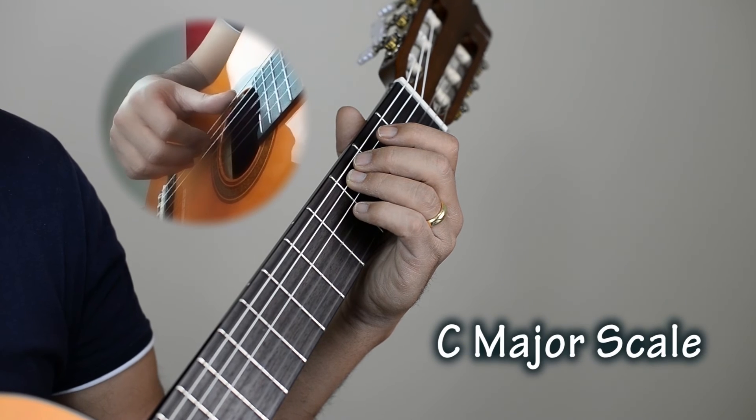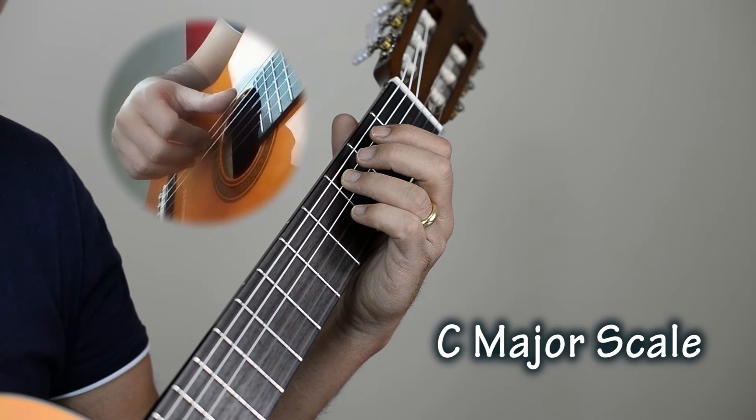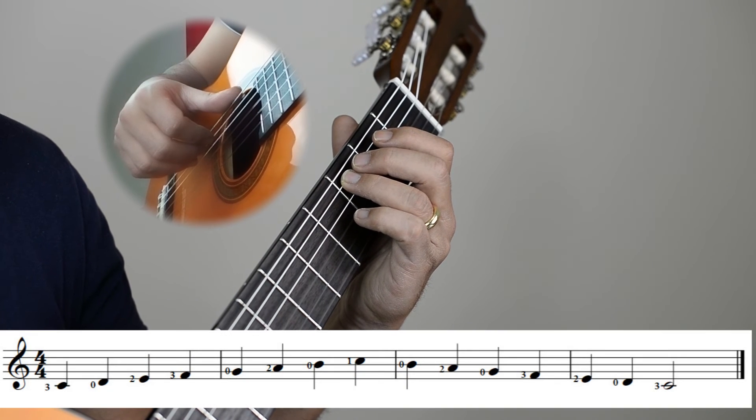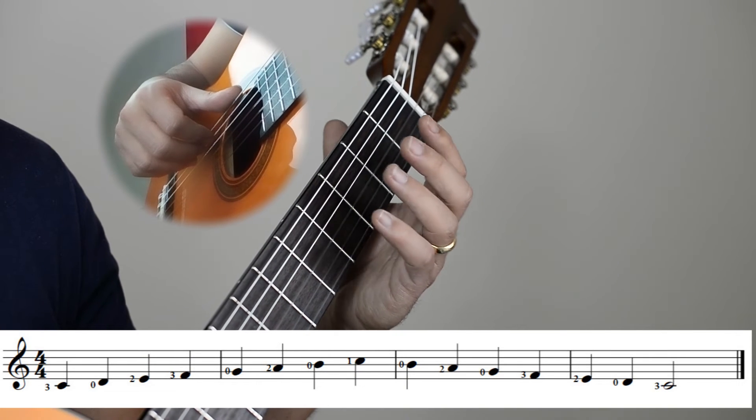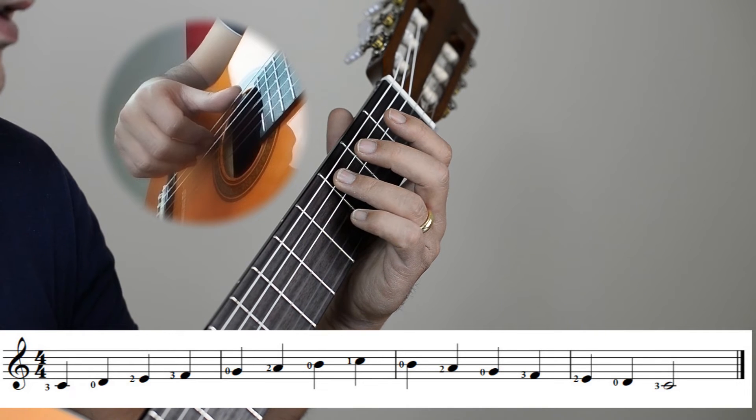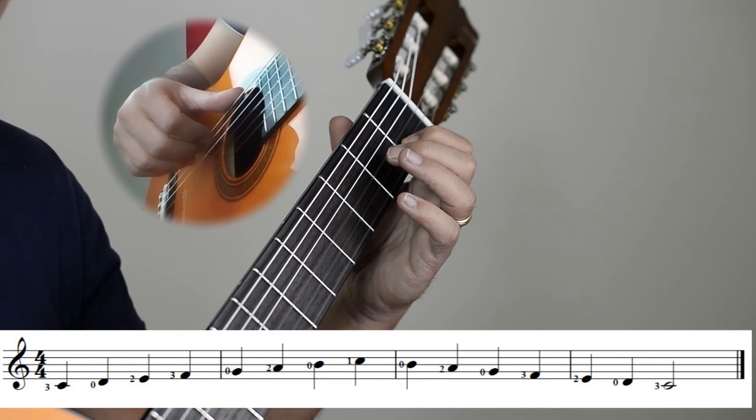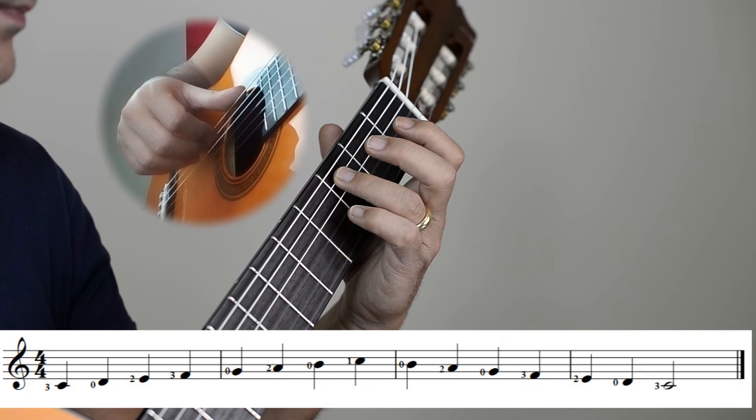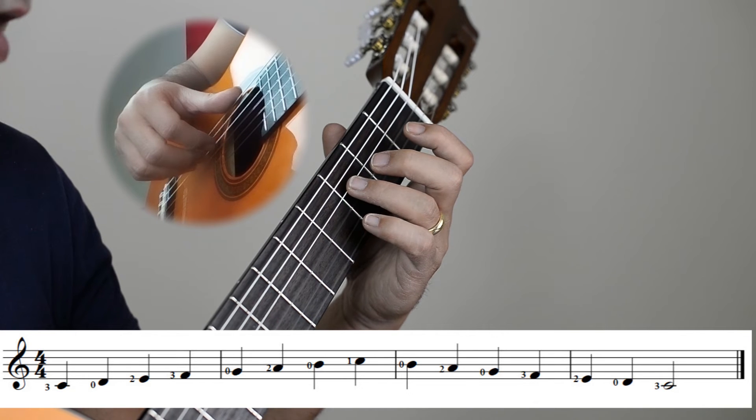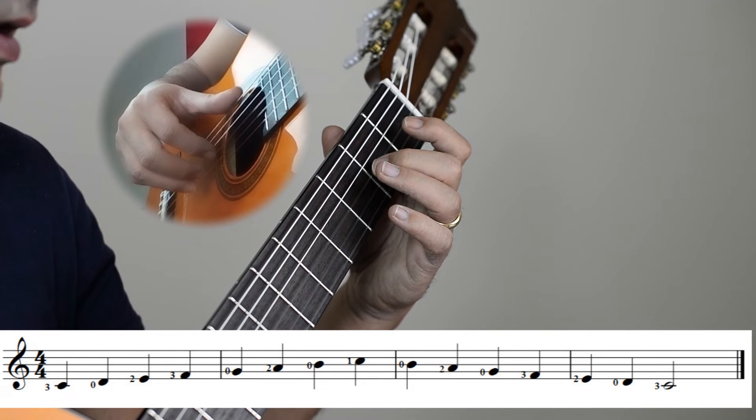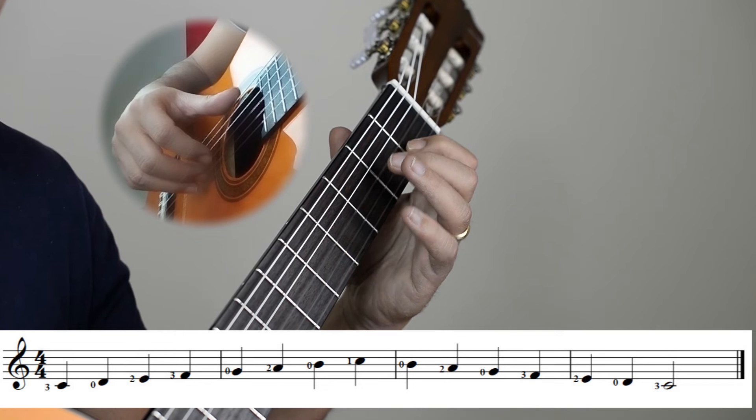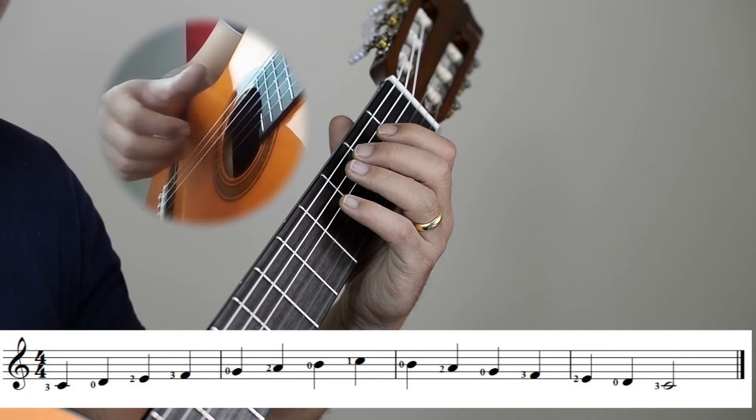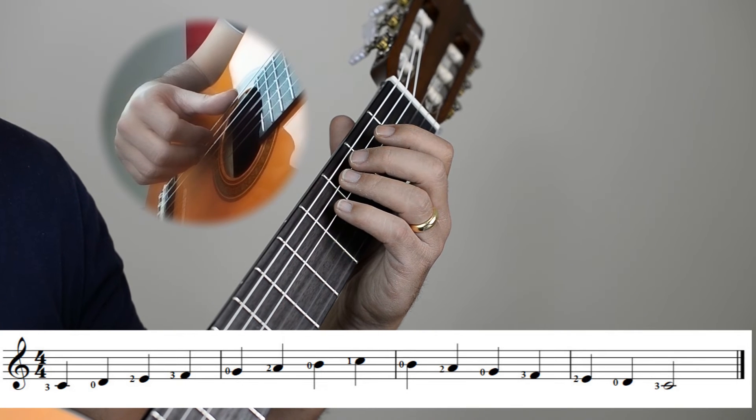The C major scale is your first scale in this course. This scale is different than any scale in music, because it consists of all natural notes. It starts on the C, all the way through the notes, and finishes on the C again. So if we start on the C, we go to D, E, F, G, A, B, and C. I keep repeating the word natural notes, because we will learn about the accidentals later on in the course.